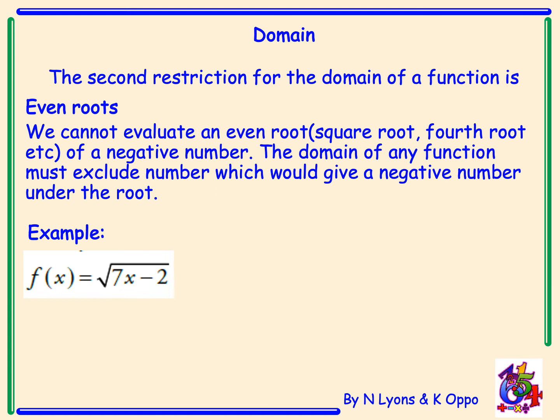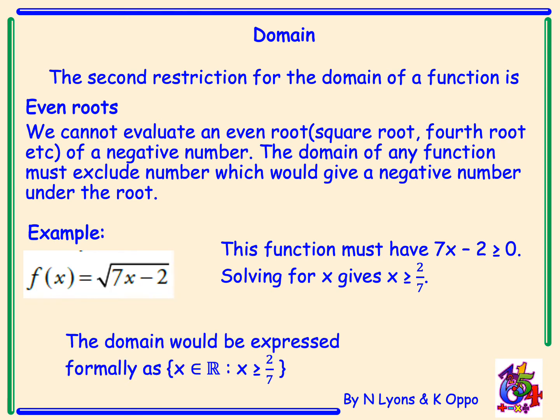Looking at this example here, we have f of x is equal to the square root of 7x minus 2. This function must have 7x minus 2 greater than or equal to zero. Solving for x would give x has to be greater than or equal to 2 over 7. And if it's not, we would then have a negative value. Therefore, the domain would be expressed formally as x is a member of all real numbers. However, x has to be greater than or equal to 2 over 7.